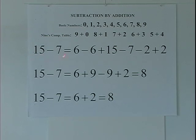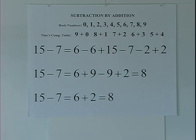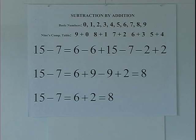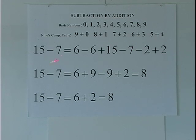I will first do the subtraction by subtraction. I add the numbers in the minuend — one plus five is six — and write it as minus six plus six plus fifteen. Six minus six is zero, and adding that to fifteen I get fifteen. I take the nine's complement of the subtrahend seven, which is two, and write minus seven as minus two plus two minus seven. Minus two plus two is zero, added to minus seven gives minus seven. So the difference fifteen minus seven remains the same.